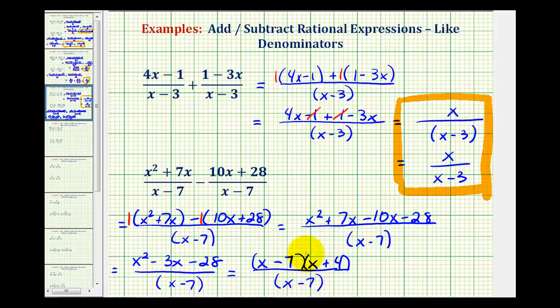Now that it's in factor form, we should notice we have a common factor between the numerator and denominator of x minus 7. x minus 7 over x minus 7 simplifies to 1. So this would simplify to the quantity x plus 4.